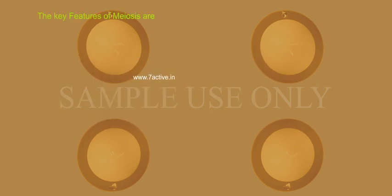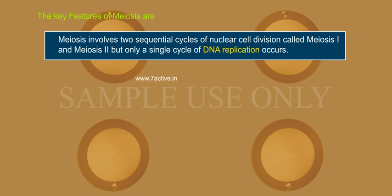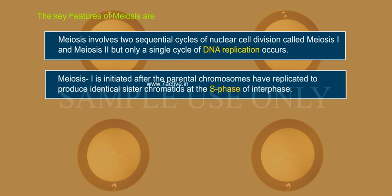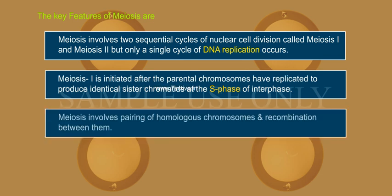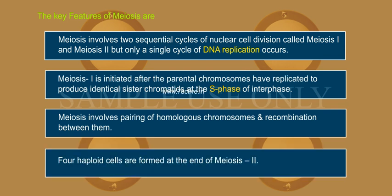The key features of meiosis are: meiosis involves two sequential cycles of nuclear and cell division called meiosis I and meiosis II, but only a single round of DNA replication occurs. Meiosis I is initiated after the parental chromosomes have replicated to produce identical sister chromatids at the S phase of interphase. Meiosis involves pairing of homologous chromosomes and recombination between them. Four haploid cells are formed at the end of meiosis II.